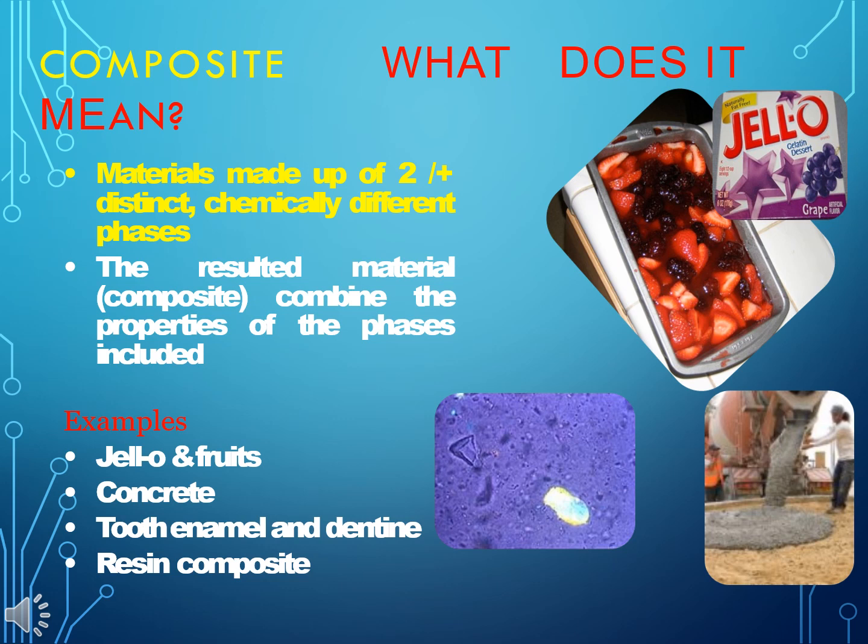What does 'composite' mean? It refers to materials made up of two or more distinct, chemically different phases. The resulting material combines the properties of the phases included. Examples include Jello and fruits, concrete, tooth enamel and dentine, and resin composite.